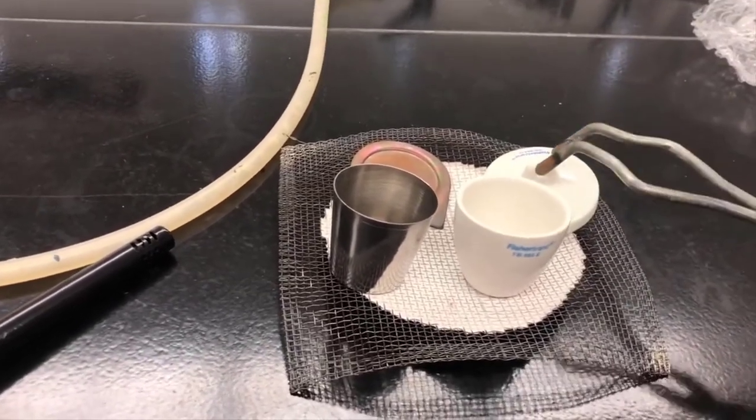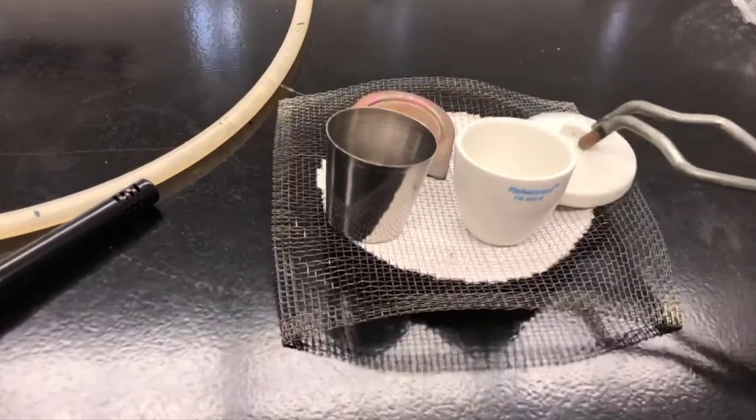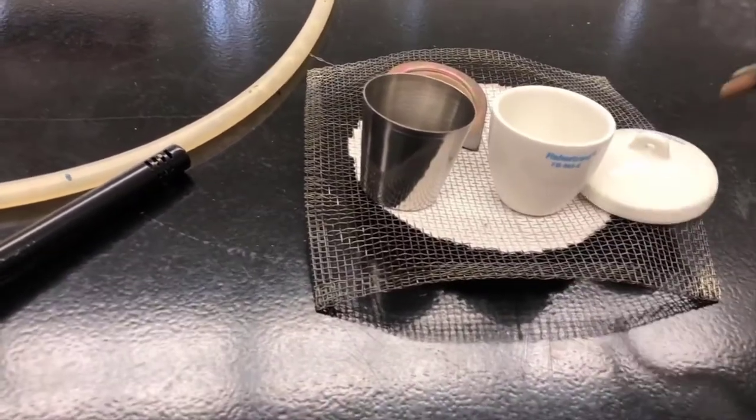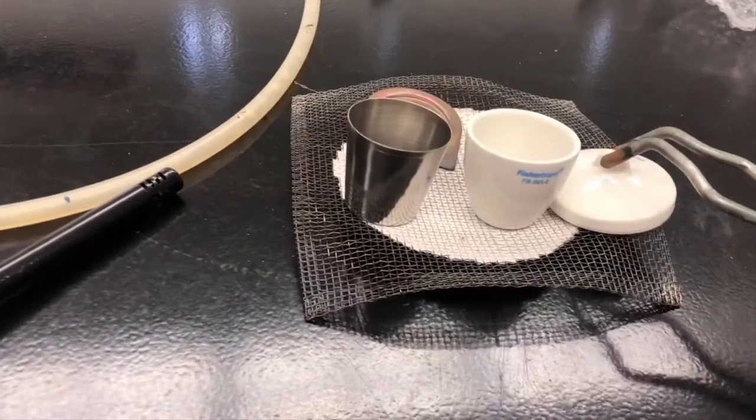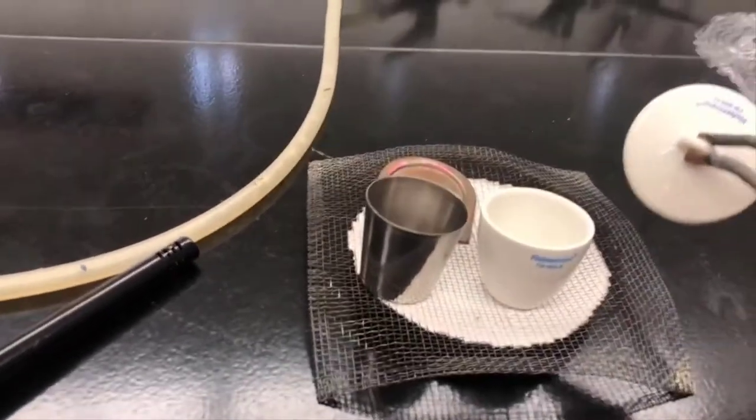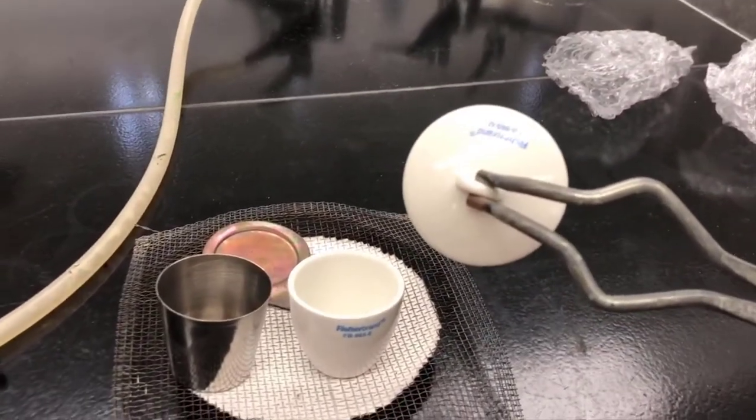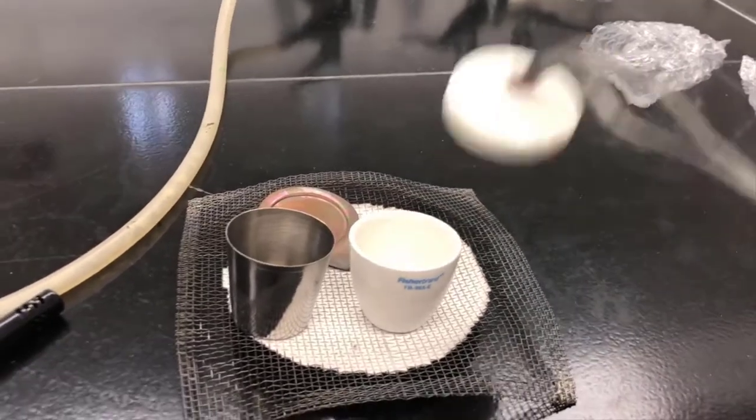So I'll show you how to handle these crucibles. You'll notice there's a little hole on the top. A lot of times people will put a little wire on there to grab, but I've always learned that if you grab it with the crucible tongs like that, it's pretty hard to drop.